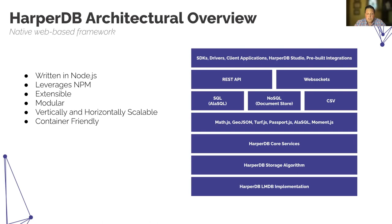On top of LMDB we layer the HarperDB storage algorithm — dynamic schema, automatic indexing — and then core CRUD services. Node.js libraries add further features. At the interaction layer you have SQL, NoSQL, and CSV — all backed by the same underlying data model. You can insert data in SQL and retrieve it with NoSQL or vice versa. Access is via the REST API or WebSockets, which handles clustering and pub/sub replication.